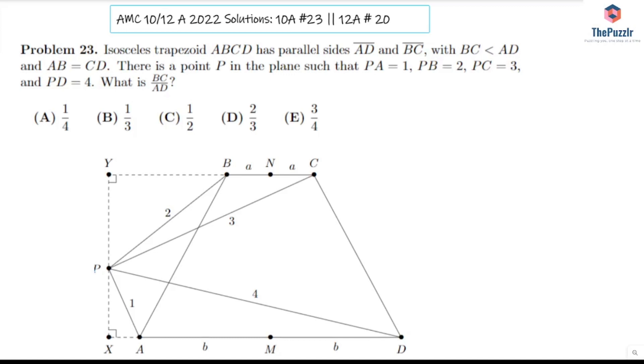Here I have problem number 23 from the 10A and problem number 20 from the 12A. Isosceles trapezoid ABCD has parallel sides AD and BC with BC less than AD and AB equals CD. There's a point P in the plane such that PA equals 1, PB equals 2, PC equals 3, and PD equals 4. What's BC over AD?